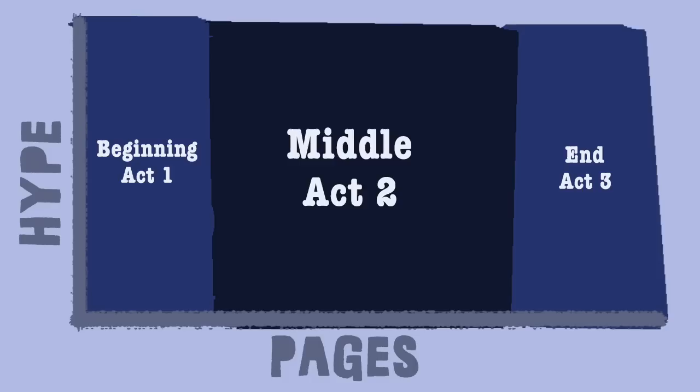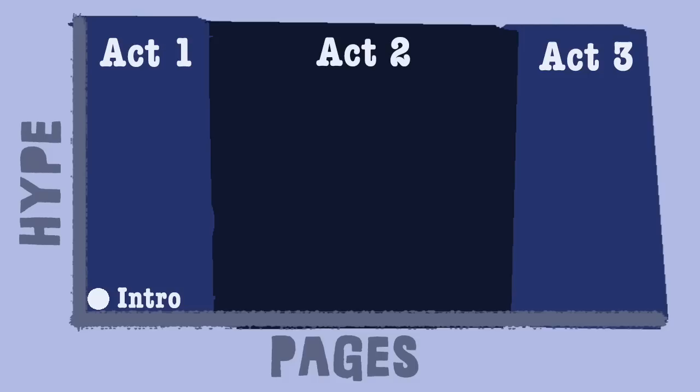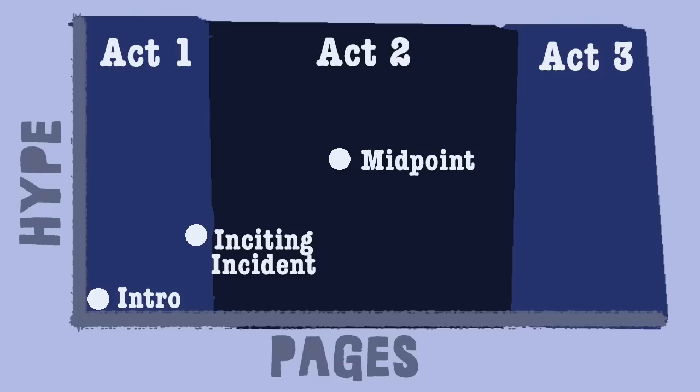First, you should be familiar with the three basic parts that make up a story: the beginning, the middle, and the end. Typically the beginning and end take up half of the story and the middle takes up the other half, though ratios may vary. Act one is the beginning — it includes the introduction and the inciting incident. Act two is the middle, which includes rising action and the midpoint. Act three is the end.